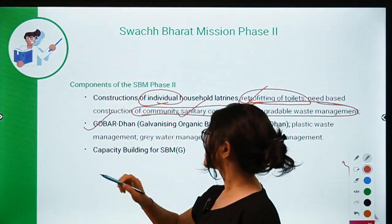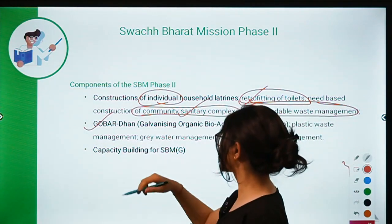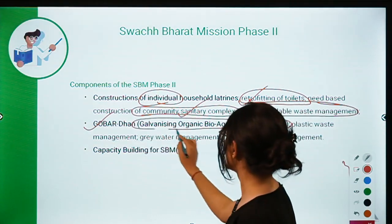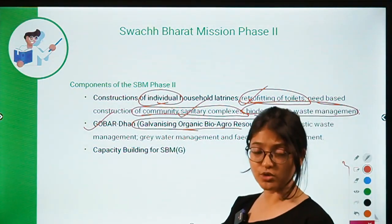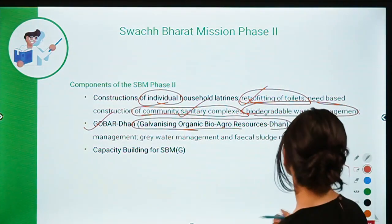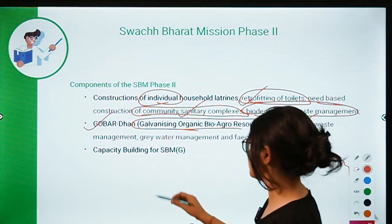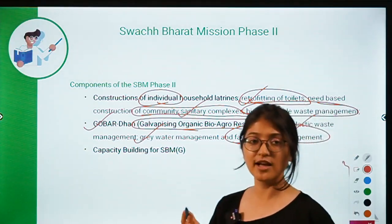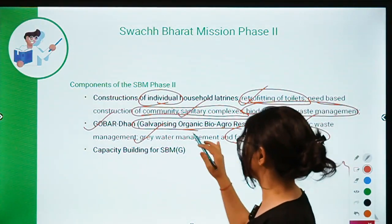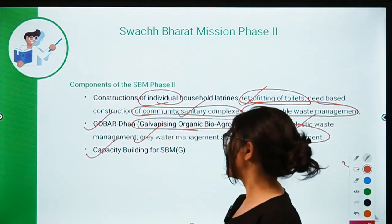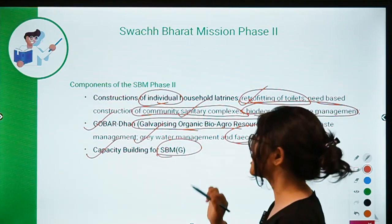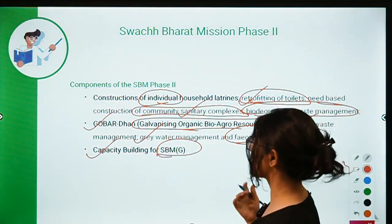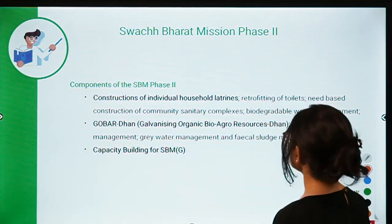Another scheme launched under SBM Phase 2 is GOBAR-DHAN — Galvanizing Organic Bio-Agro Resources Dhan — which covers biogas schemes by the Government of India. Other components include plastic waste management, grey water management, fecal sludge management, and capacity building — training people with the requisite skills needed for the mission.